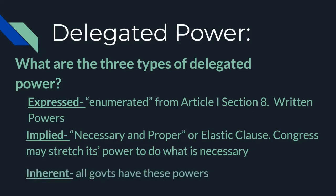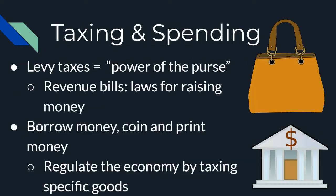Lastly, we have our inherent powers. These are powers that all governments have — they are inherent to all types of government. Things like regulating their borders, bringing people in and out of the country, and a few other types we'll discuss. So hopefully you got all of those in our little review. The first power we'll talk about within Congress is what is commonly called the power of the purse — taxing power and spending power.